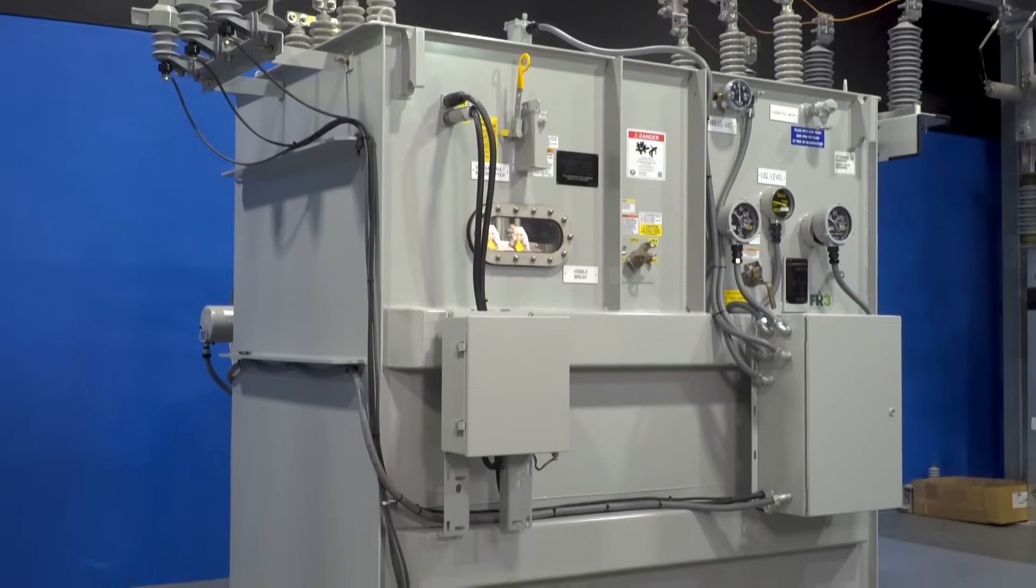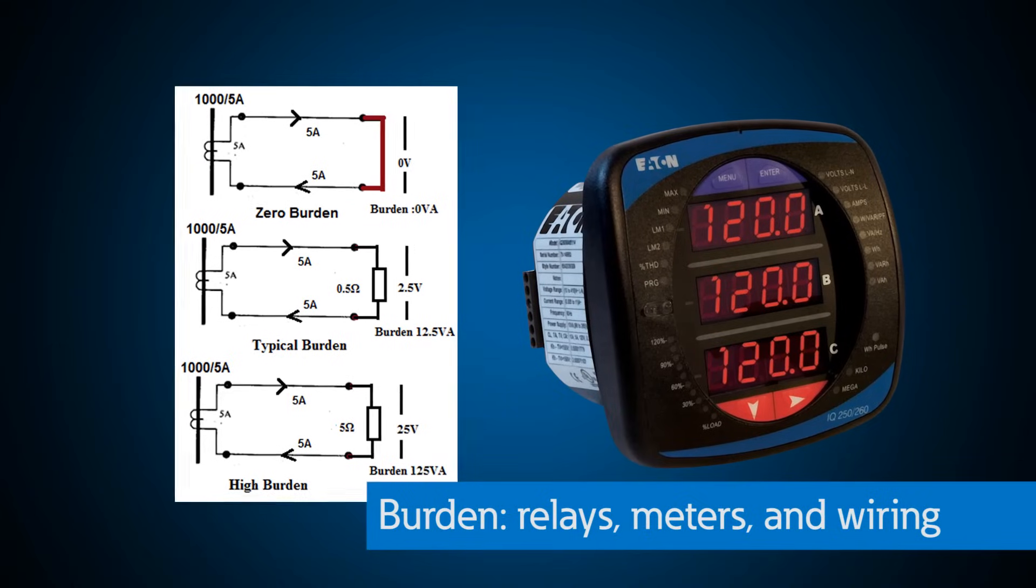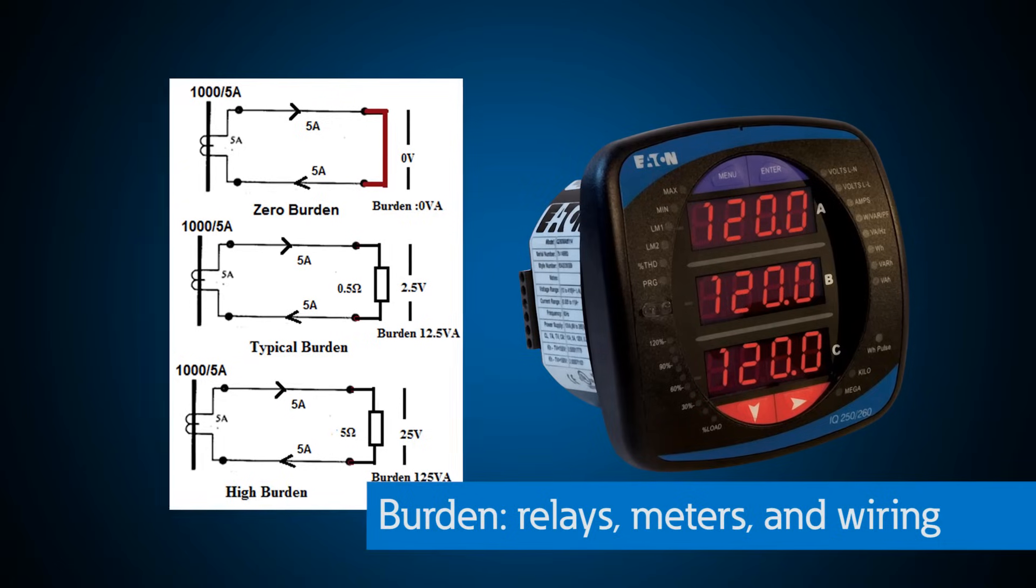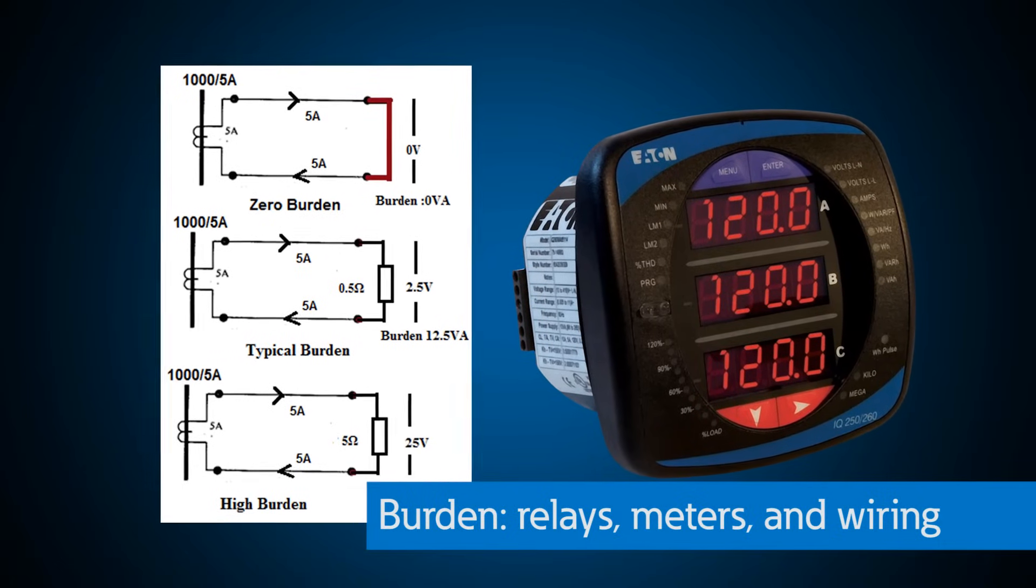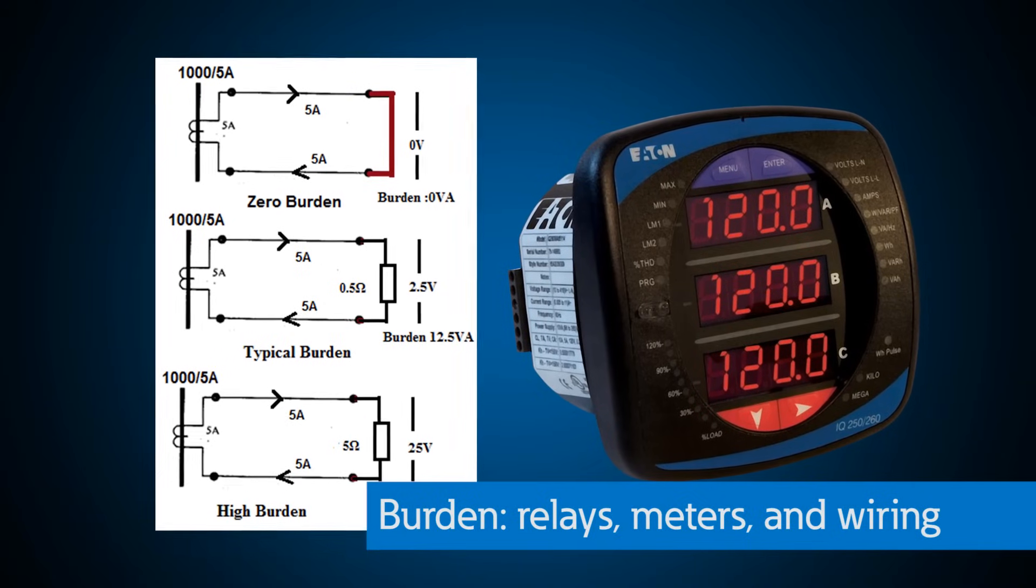Like all transformers, CTs have volt ampere or capacity ratings. CTs have limits to the number of devices and length of wire that can be connected to its secondary side, which is called the burden. Items that contribute to burden are relays, meters, and wiring. The best way to reduce burden is to keep the conductors between the CT and the metering devices as short as possible or increase the wire size to reduce resistance. The burden for today's modern electronic relaying and metering is very low compared to older equipment, but care must be taken to ensure CTs are not overloaded or inaccurate current measurements or protection will result.